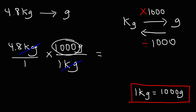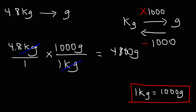Because 1,000 is on the top of the fraction, we're going to multiply 4.8 by 1,000. If it were on the bottom, we would divide by 1,000. So it's 4.8 times 1,000, which is 4,800 grams. So that's the answer for this example.